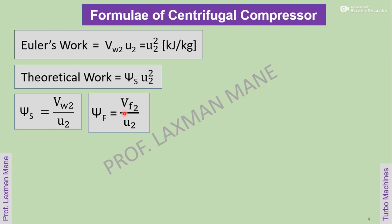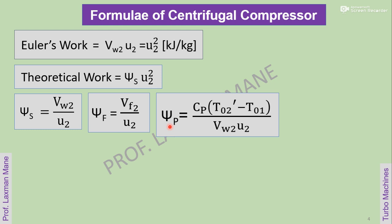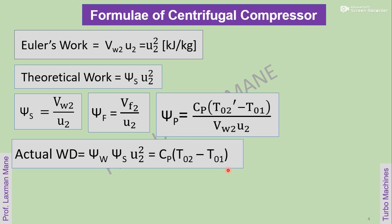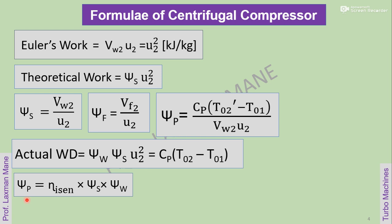Flow coefficient is the ratio of flow velocity to blade velocity at outlet. Pressure coefficient is the ratio of Cp into (P02' minus P01) to Vw2 into U2. Actual work done is given by the formula psi_w into psi_s into U2 square, and it is further equal to Cp into (T02 minus T01). Pressure coefficient is also given by isentropic efficiency multiplied by slip factor multiplied by work input factor.